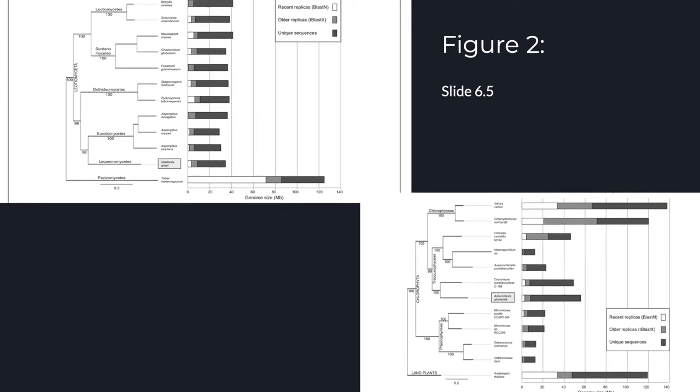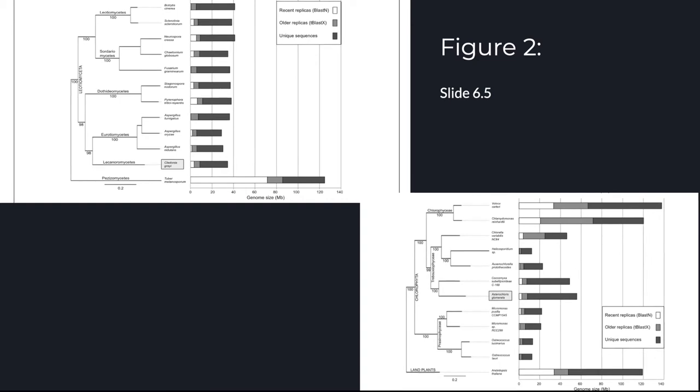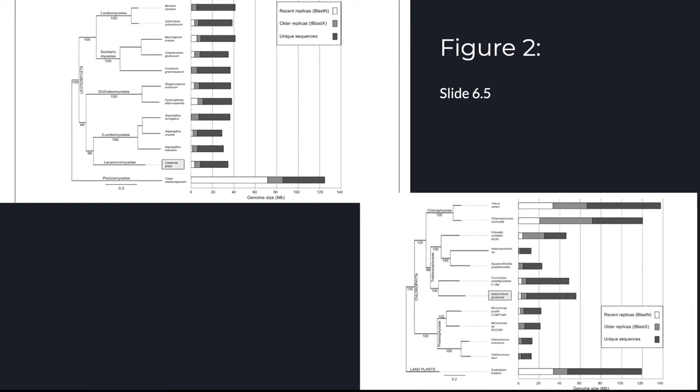The researchers said that the genome size was average for a lichen, so it was not affected by transposable elements that increases the size of the genome, except for this transposable element that they found.